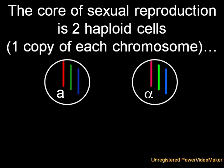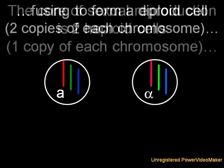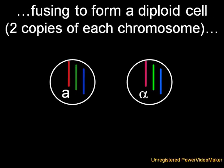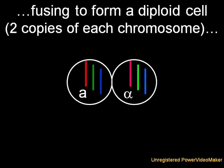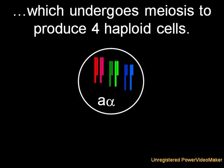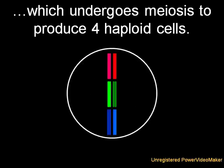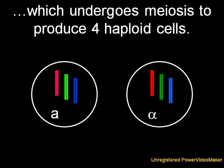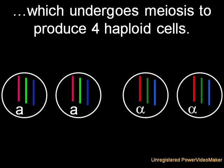Sex at its most basic level is the fusion of two haploid cells — meaning they only have one copy of each chromosome — to form one diploid cell, which has two copies of each chromosome. This then undergoes meiosis, which involves the replication of the DNA, followed by two cell divisions, eventually resulting in the production of four haploid cells.